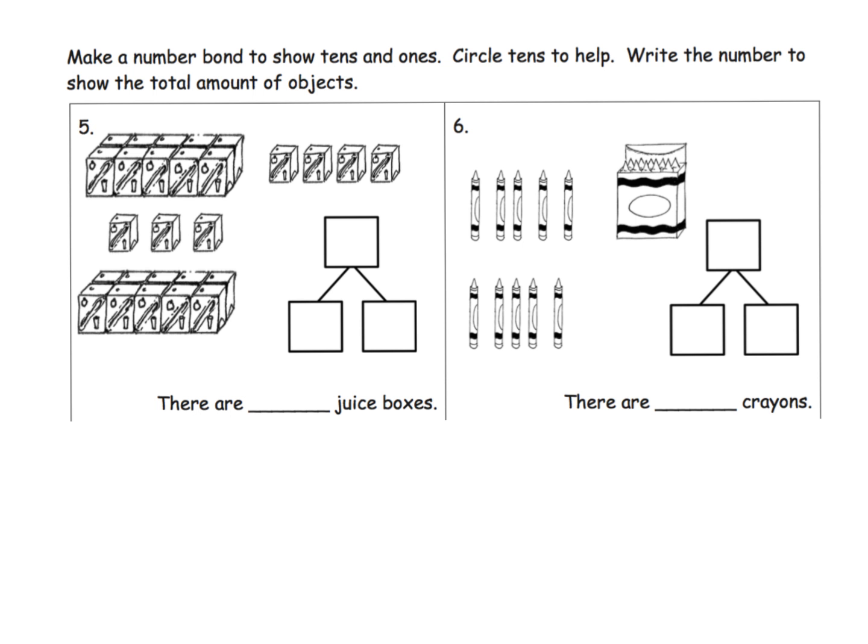More of the same, only now we are going to create number bonds to show the tens and the ones. So the idea is I see two groups of 10, so we're going to call that 20. And then I see four over here, three over here, so I'm going to count one, two, three, four, five, six, seven.